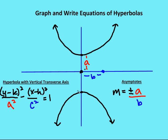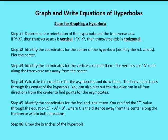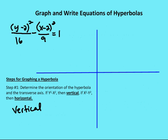So in this case I move a units up and a units down along the transverse axis, and in the case where the transverse axis is horizontal, I move a units to the left and a units to the right from the center. Let's go back to our steps for graphing a hyperbola and walk through an example. The first step is to determine the transverse axis — whether it's vertical or oriented horizontally.